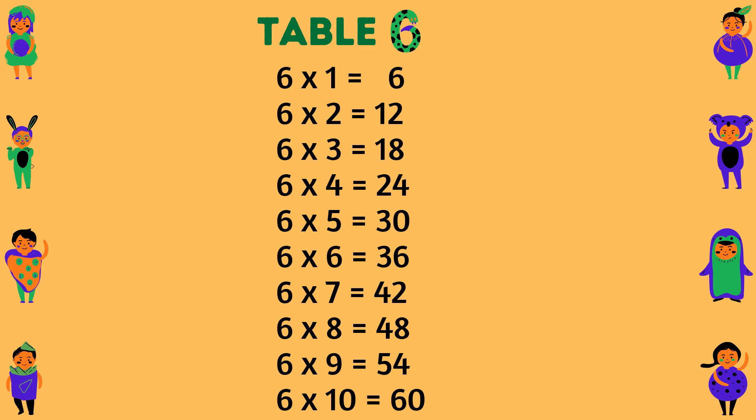Table of 6. 6 times 1 equals 6. 6 times 2 equals 12. 6 times 3 equals 18. 6 times 4 equals 24. 6 times 5 equals 30. 6 times 6 equals 36. 6 times 7 equals 42. 6 times 8 equals 48. 6 times 9 equals 54. 6 times 10 equals 60.